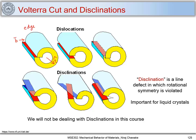Similarly, if I consider this case where I have a dislocation line as an axis and I move along this direction after making a cut, the Burgers vector is parallel to the dislocation line, and thus it becomes a screw dislocation — a pure screw. And here in this case, it is a mixed dislocation, where the Burgers vector makes some angle with the dislocation line vector.